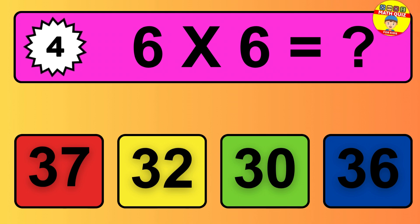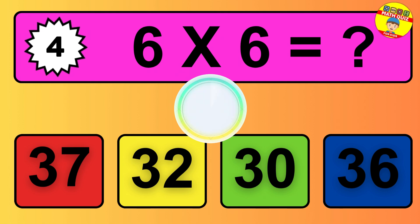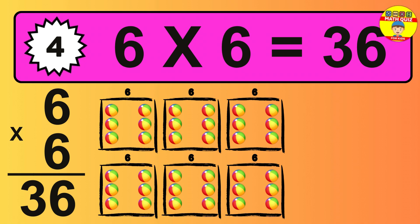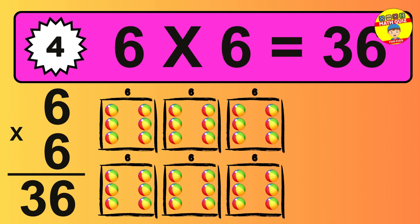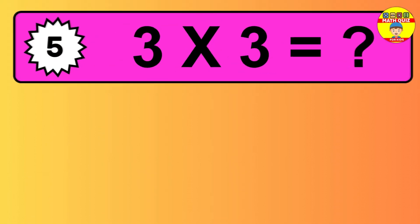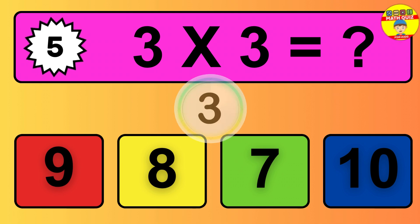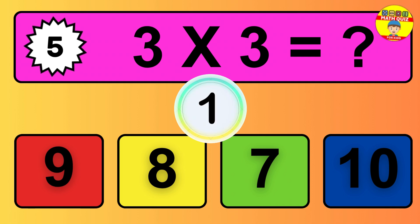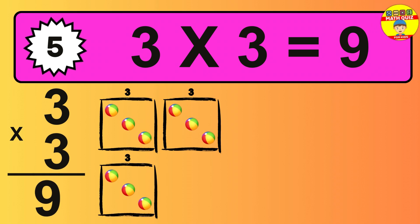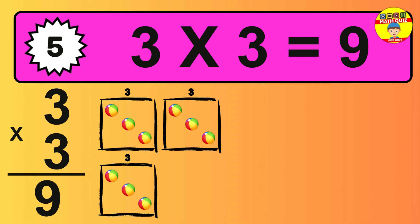Question 4. 6 times 6 equals what? The answer is 6 times 6 is 36. Question 5. 3 times 3 equals what? The answer is 3 times 3 is 9. To calculate, we have 3 groups with 3 balls each one. So how many balls do we have? 9 balls.